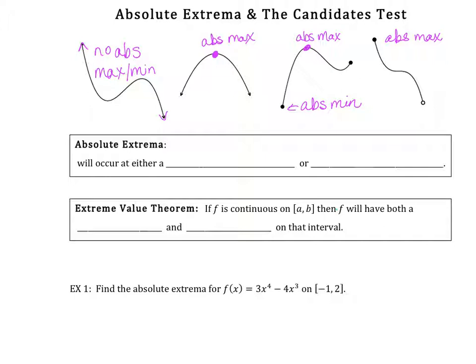I could have drawn a picture and that would have an absolute max. So I want to make a statement that's true for everything: an absolute extrema will occur at either a critical point or at an endpoint. Remember, a critical point is where the first derivative is either zero or undefined.